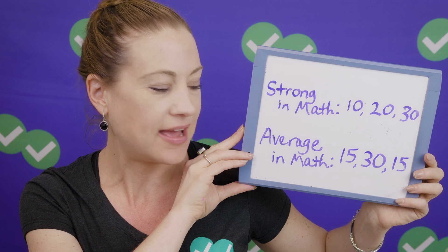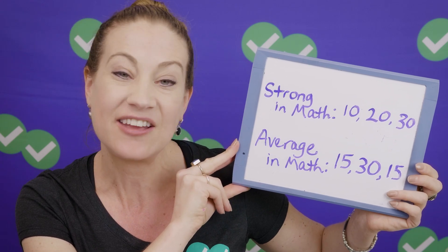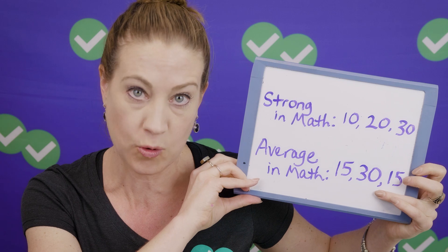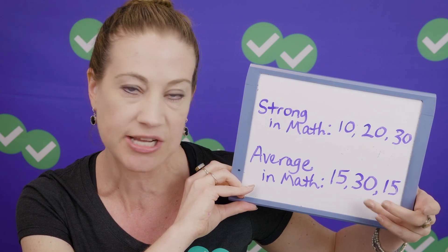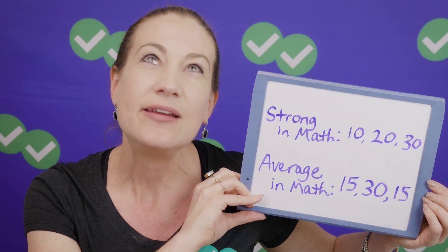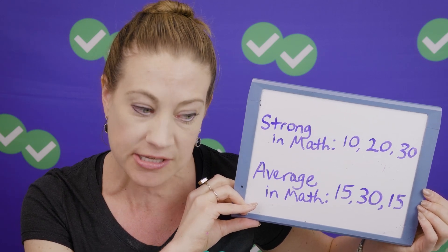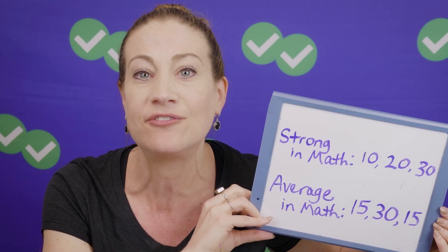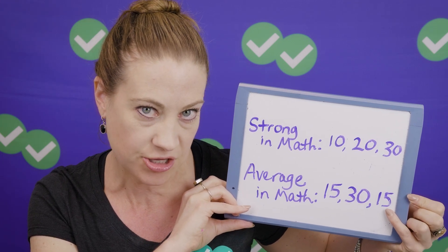If you're more average in math and not quite as quick, a split might be something like 15-30-15. In this scenario you'd spend about half your time on those middle questions — 30 minutes — with 15 minutes for the easiest third and 15 minutes for the hardest third. Keep in mind that if you miss half the questions — say you only get 30 to 32 correct — that's going to translate into a roughly average score. In a normal math class that would be a failing score, but on the ACT it's average. So if you don't get many questions right in the last third, you're still in pretty good shape.